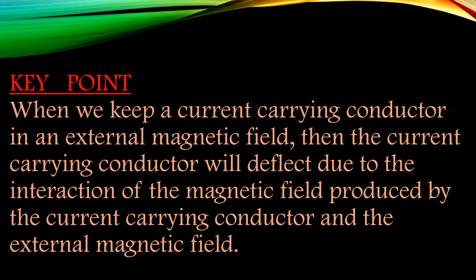Whenever current flows through a conductor, it will be producing a magnetic field around it. When we place this current carrying conductor in an external magnetic field produced by another magnet, this conductor will experience a force. And due to this force, the conductor will be deflecting. So a current carrying conductor placed in an external magnetic field will deflect due to the force experienced by it in that magnetic field.